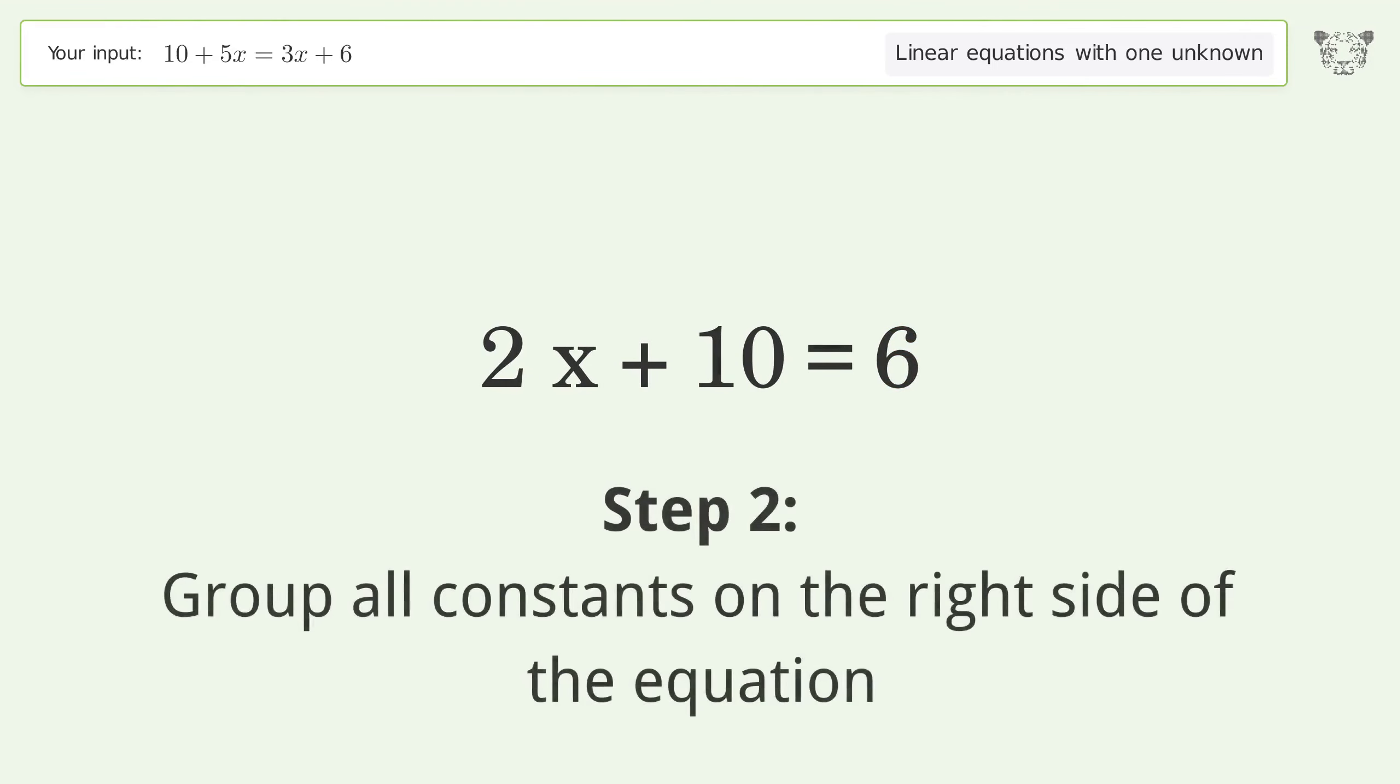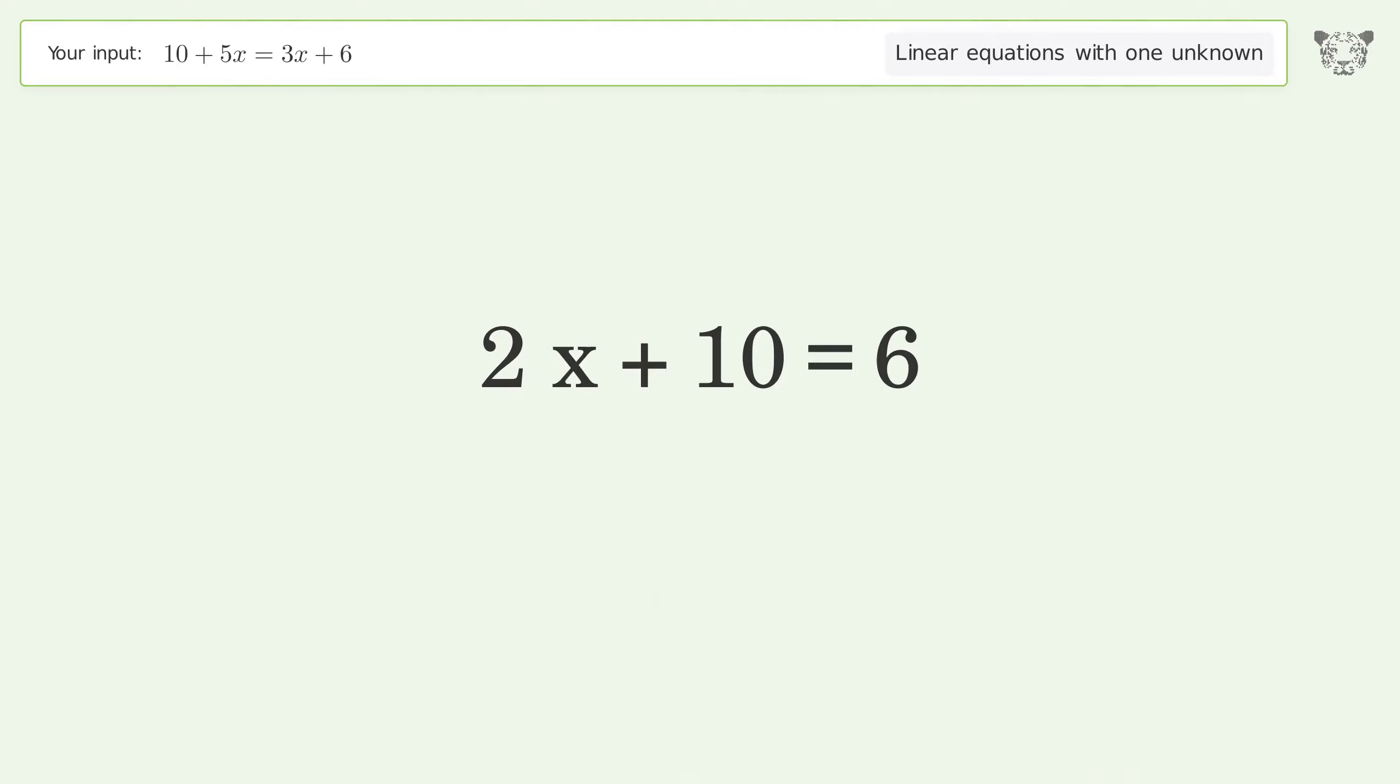Group all constants on the right side of the equation. Subtract 10 from both sides. Simplify the arithmetic.